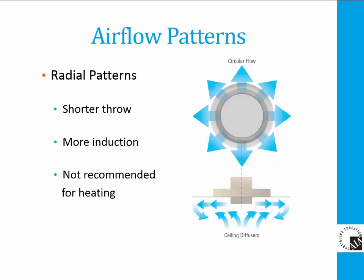There are two basic types of airflow patterns. First, we will look at a circular flow air pattern, sometimes called a radial air pattern. When air is discharged from an outlet and distributed evenly in all directions, it is known as a radial air pattern. Since air is discharged evenly in all directions, the result is that it travels a shorter distance from the center of the outlet to a given terminal velocity, let's say 50 feet per minute.